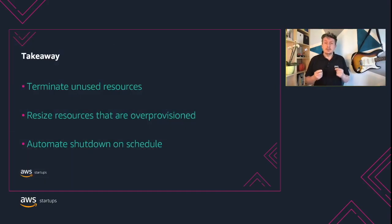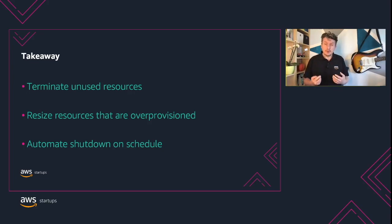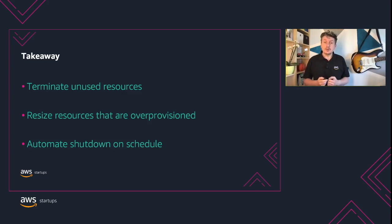So what is the takeaway from this design principle? First, terminate unused resources — use Amazon CloudWatch to identify instances that are not being used. Second, resize resources that are over-provisioned and use the lowest cost resources that meet the requirements of the specific workload. And finally, automate shutdown on a schedule for instances when not in use. AWS has already provided a solution for custom start-stop schedules that work with EC2 and RDS instances.